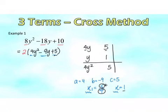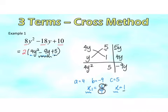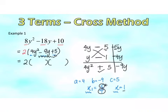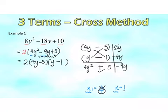Let's apply the cross method. Y times 5 gives 5Y; 4 times 1 gives 4Y. We want negative 9Y, so we need to make both terms negative — transferring the sign gives minus 5 and minus 1. Checking: negative 5 times negative 1 gives positive 5 — the sign is correct. Therefore, the final answer is 2 times (4Y minus 5) times (Y minus 1). In your exam, erase the rough working.